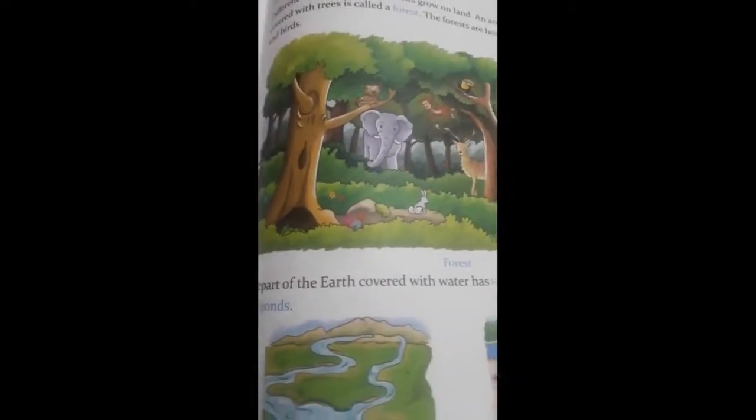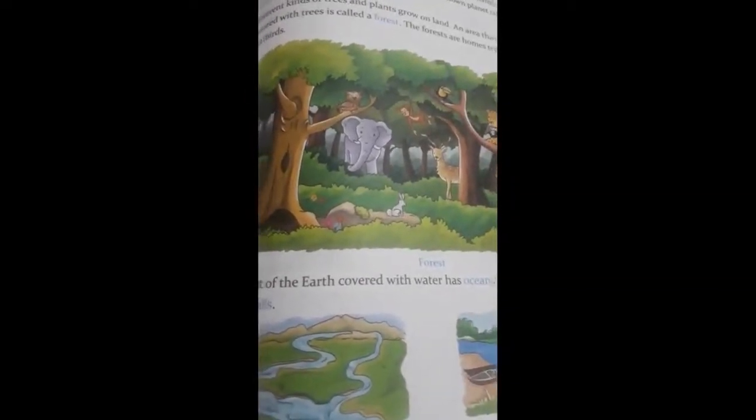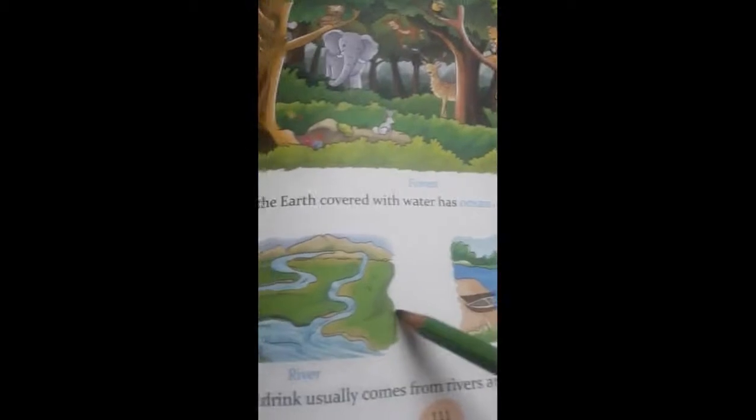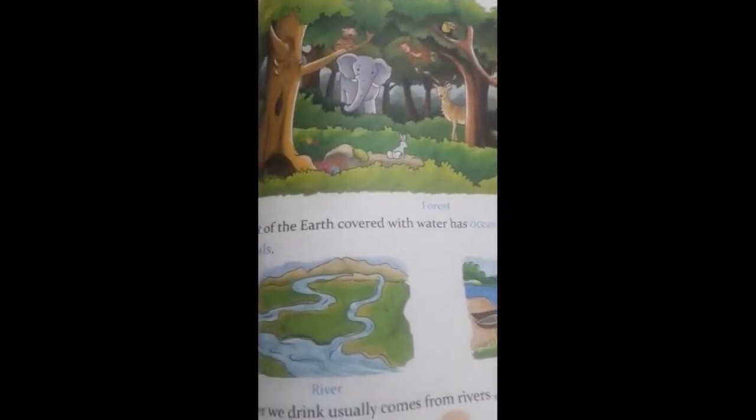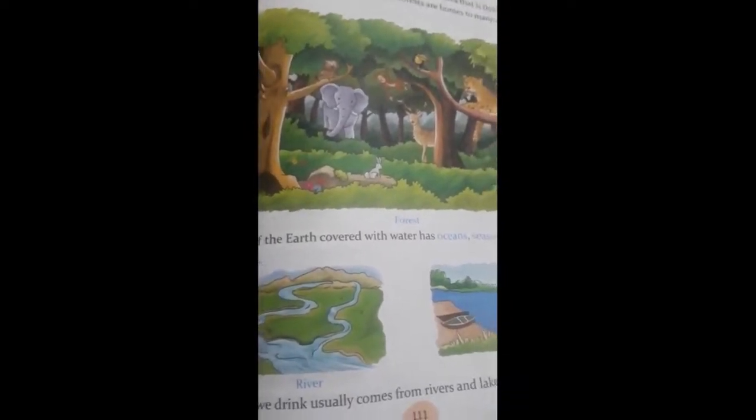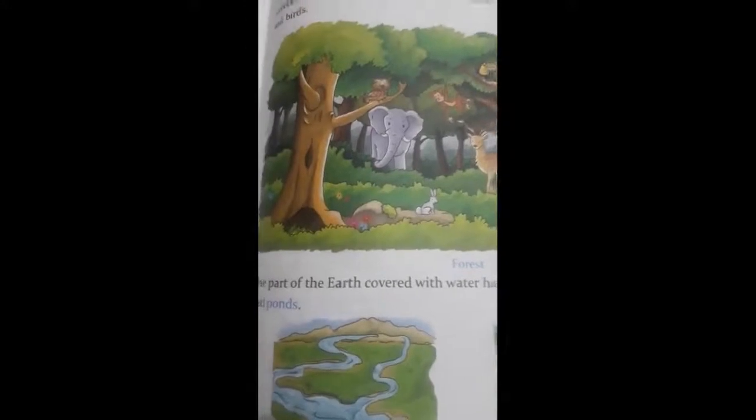So children, the part of Earth covered with water has oceans, rivers, lakes and ponds. Now you can see in this picture. The water we drink usually comes from the rivers and lakes. Now next page.